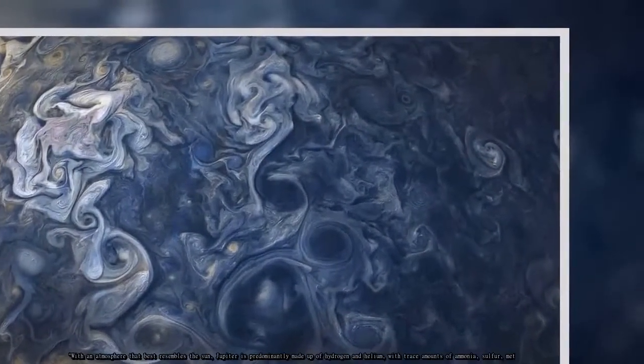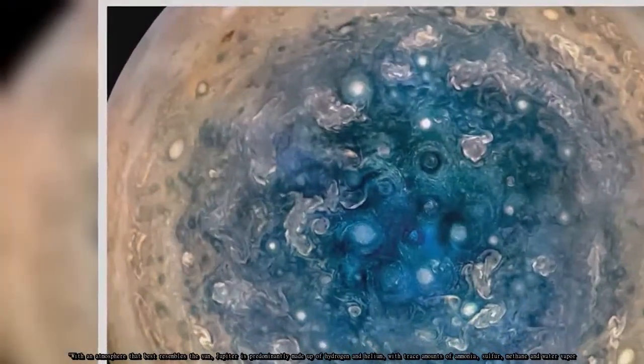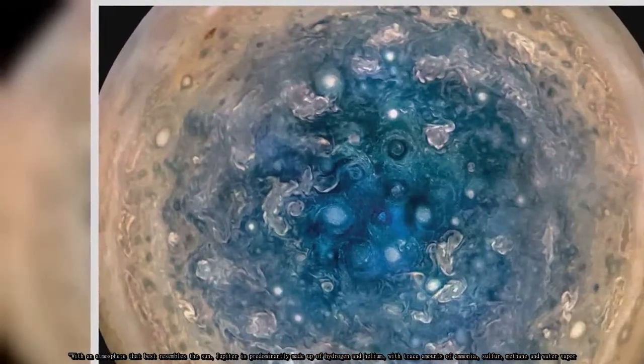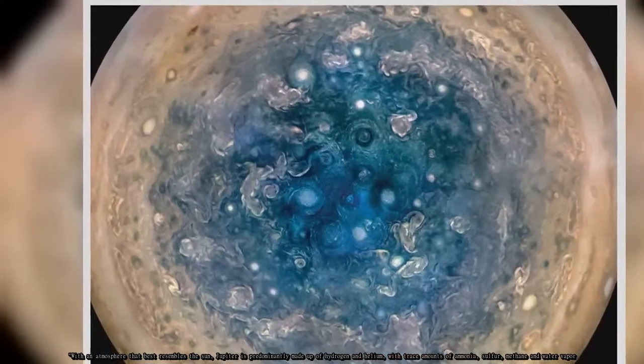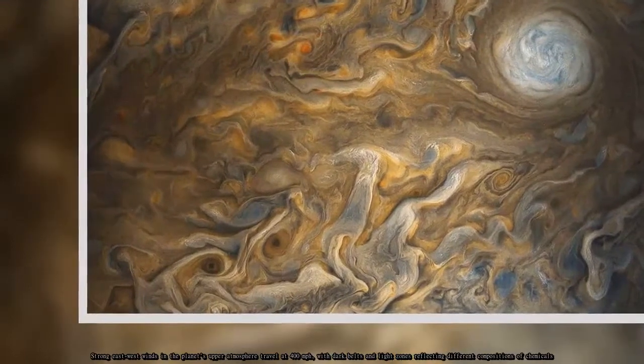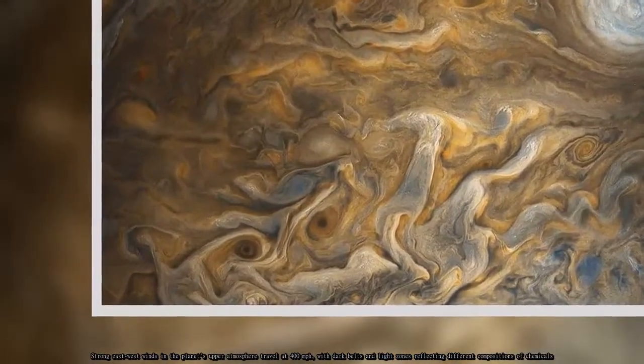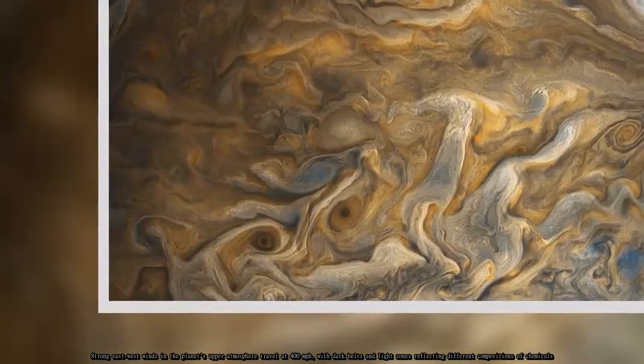With an atmosphere that best resembles the Sun, Jupiter is predominantly made up of hydrogen and helium, with trace amounts of ammonia, sulfur, methane and water vapor. Strong east-west winds in the planet's upper atmosphere travel at 400 mph, with dark belts and light zones reflecting different compositions of chemicals.